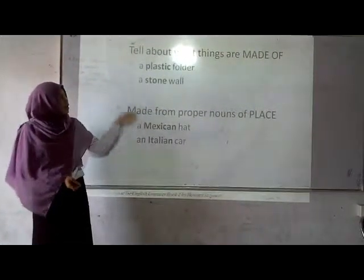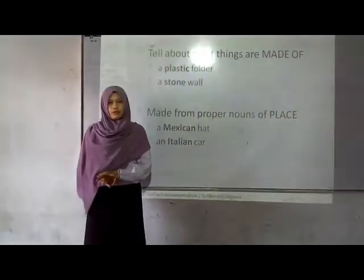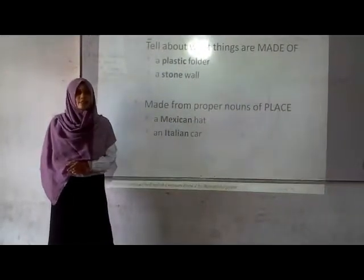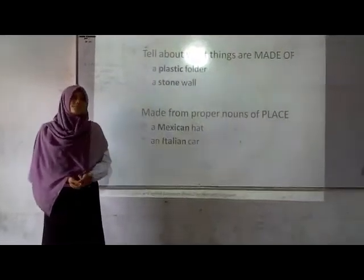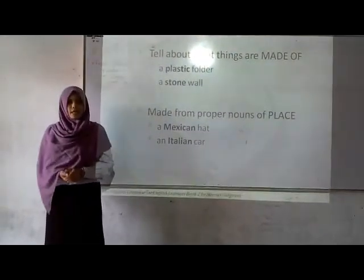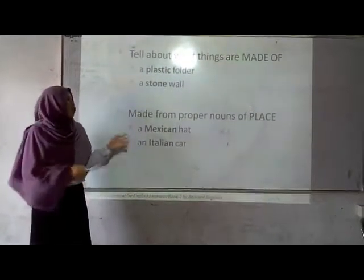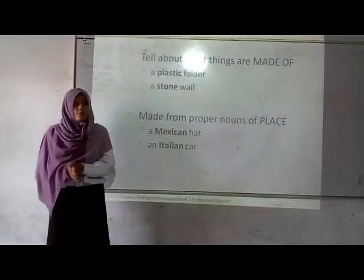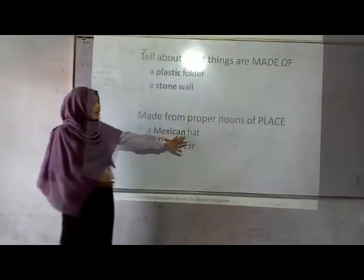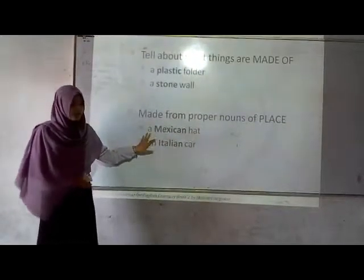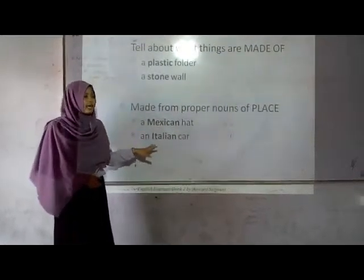The fourth, the adjective can tell us about the material of the thing. For example, a plastic holder and a stone cloth. And the last, the adjective can also tell us about where the thing comes from. For example, a Mexican hat — that means the hat is from Mexico. Or an Italian car — that means the car is made in Italy.